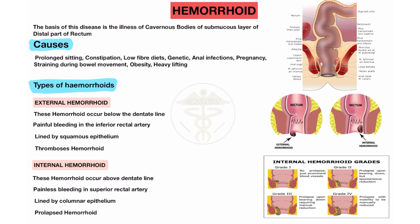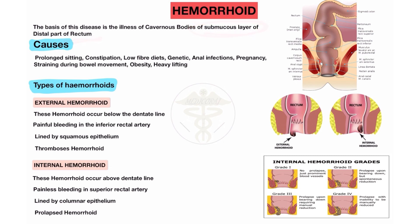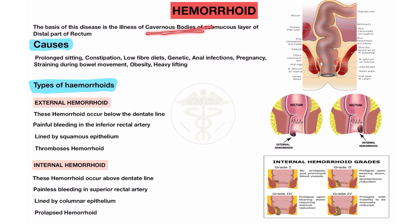Hemorrhoids. The basics of this disease: it is the illness of cavernous bodies of the sub-mucous layer of the distal part of the rectum. In hemorrhoid disease, the condition occurs in the sub-mucous layer of the distal part of the rectum. When discussing paraproctitis, it involves the mucous layer of the rectal part.